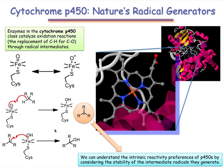The intrinsic reactivity preferences of the P450s — that is, how the iron-oxygen double bond would react in the absence of any orienting effects by the enzyme — are determined by the stability of the possible radicals that may be formed on the substrate. This means we can use the principles of radical stability we've already learned, as well as bond dissociation energies, to predict the most likely site of oxidation.